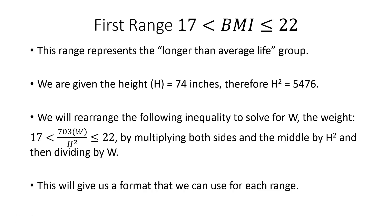The first range is where the BMI is greater than 17 but less than or equal to 22, which represents a longer than average life. We know the height is 74 inches. The BMI formula is 703 times weight divided by height squared, and we set that greater than 17 and less than or equal to 22. I'm going to rearrange this formula and solve for W.